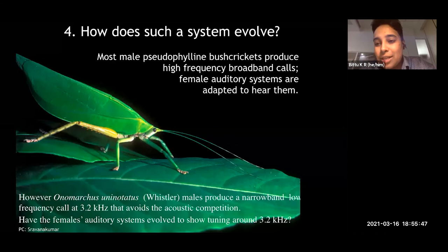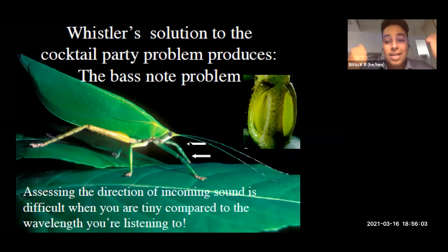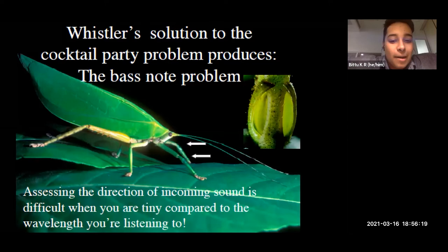The question is: have the females' auditory systems also evolved to show tuning around 3.2 kHz? This is the call — a beautiful low-frequency call, largely found specifically in the Western Ghats. Some of the physical problems I call the 'bass note problem': when these animals produce such low-frequency calls, how are they heard and how are they localized? Localization is particularly difficult when you are really tiny compared to the wavelength of the sound you're listening to.